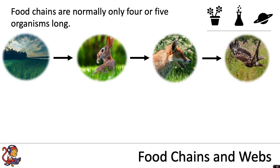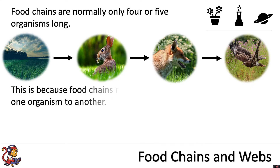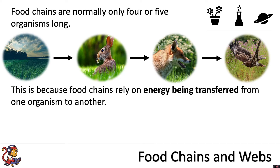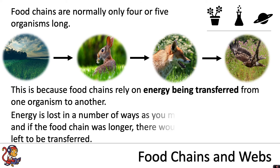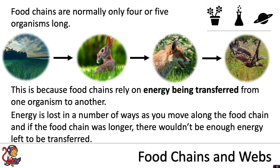Food chains are normally only four or five organisms long, and this is because food chains rely on energy being transferred from one organism to another. Energy is lost in a number of ways as you move along the food chain, and if the food chain were longer there just wouldn't be enough energy left to be transferred.